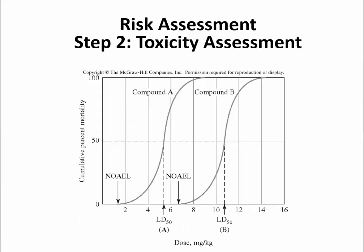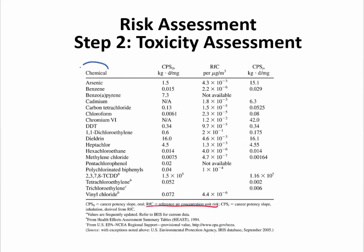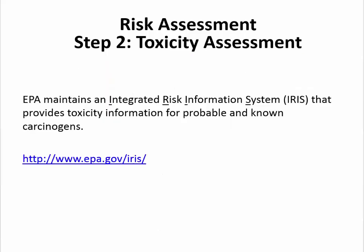In class, I reviewed a typical dose-response curve and introduced two vocabulary words: the LD50 and the no observed adverse effect level. In your textbook, you will work with a table where you look up different chemicals, and there are two exposure pathways — oral and inhalation — represented. Many toxic chemicals are not listed there, and for those you would be directed to an online database maintained by the EPA, referred to as the Integrated Risk Information System, or IRIS.